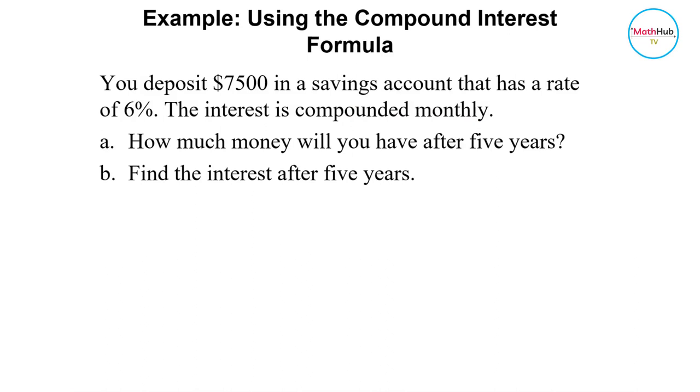How much money will you have after 5 years? Find the interest after 5 years. Since this is compounded monthly, N here is equal to 12. Rate is 6% and then express that in decimal. So that is equal to 0.06.